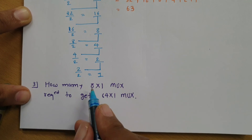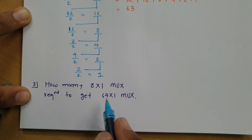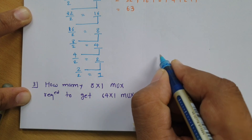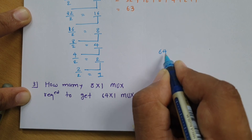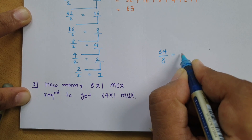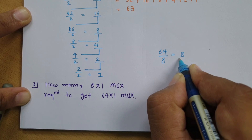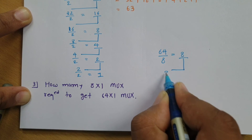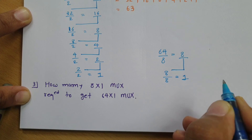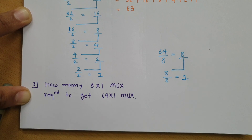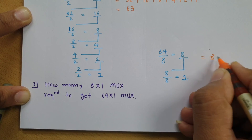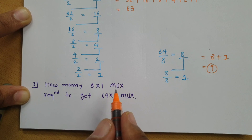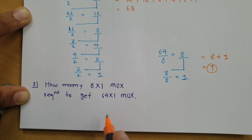Next question: how many 8×1 multiplexers are required to get a 64×1 multiplexer? Higher order divided by lower order: 64 ÷ 8 = 8, then 8 ÷ 8 = 1. Since the answer is 1, we stop. Adding: 8 + 1 = 9. So by having a total of 9 eight-by-one multiplexers, we can obtain a 64×1 multiplexer.